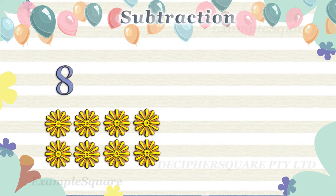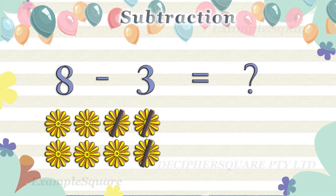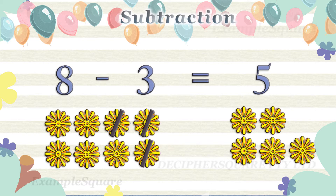There are eight flowers. How many flowers are left if three flowers are taken away from eight flowers? If three flowers are taken away from eight flowers then five flowers are left. Eight minus three equals five.